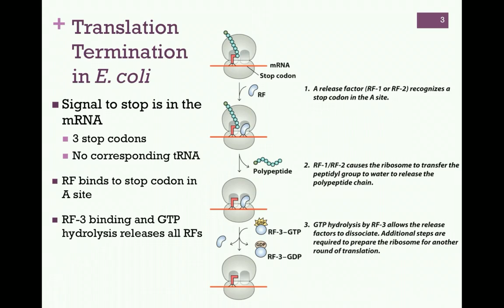Let's see how this process works as illustrated in the figure on this slide. Transpeptidation and translocation have occurred, so now we have our complete polypeptide chain attached to the three-prime end of the tRNA in the p-site, and the stop codon of the mRNA is positioned in the a-site. Now, one of the prokaryotic release factors binds—RF1 or RF2—and recognizes that stop codon.